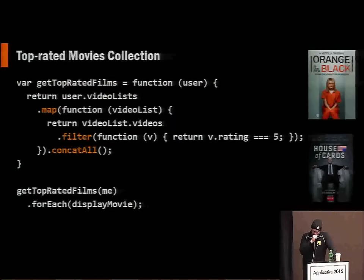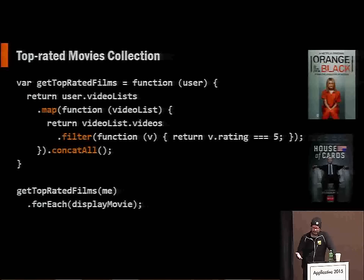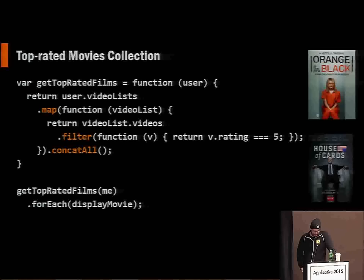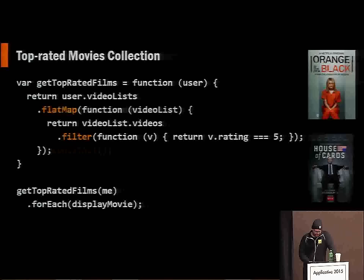Let's take a look at some Netflix code to give you an idea. For example, I want to get top-rated films from Netflix. You would first start out with, for a given user, you get their video lists. From their video lists, you map to get the videos and filter where the rating is five. Then you flatten it into a single sequence, so now you have all the particular videos you want in a nice single collection. Then you can go ahead and look at those by calling forEach or subscribe — they're an alias for the other.